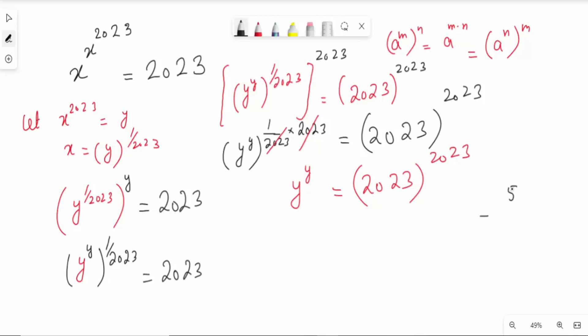Look at if something has power itself, like if 5 has power 5, x has power x, then we can write like this: y has itself power and 2023 has itself power.